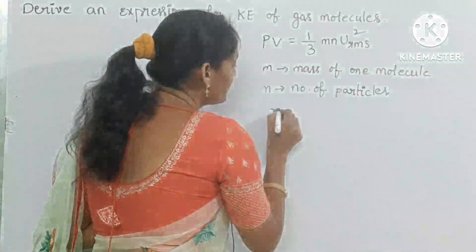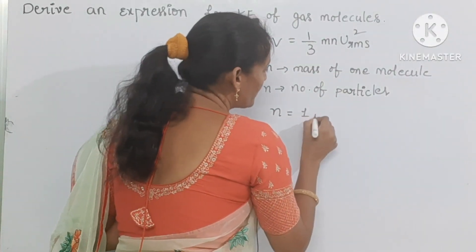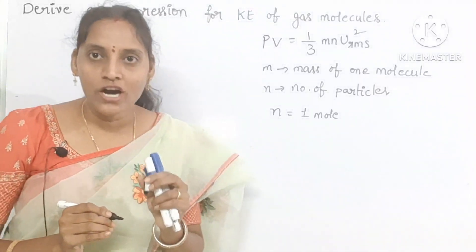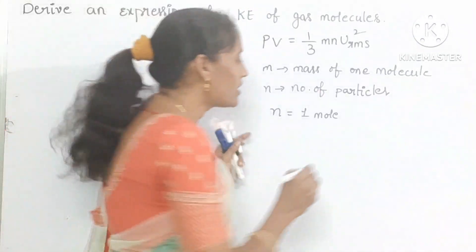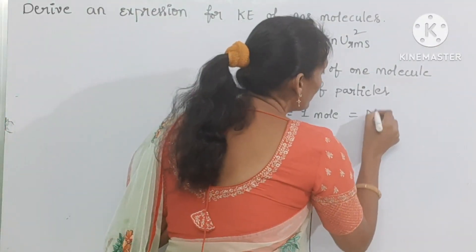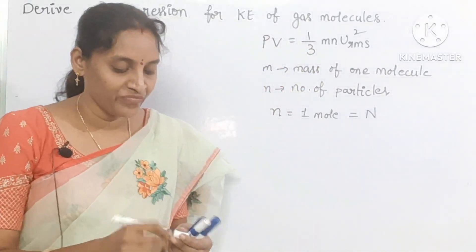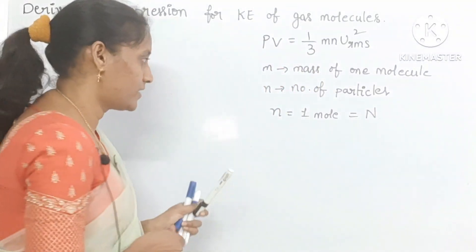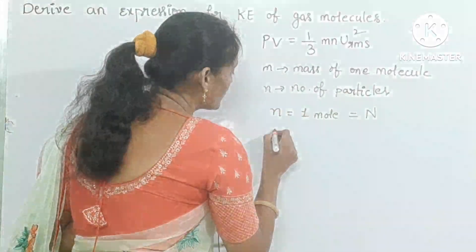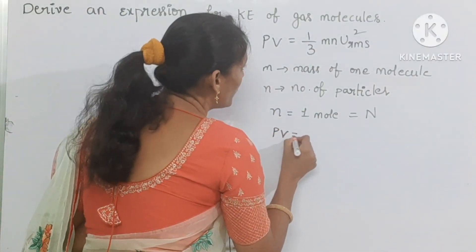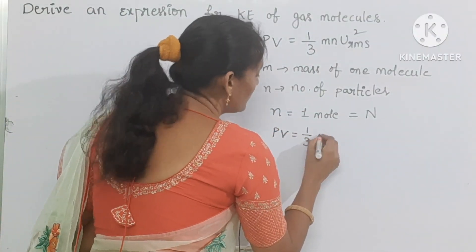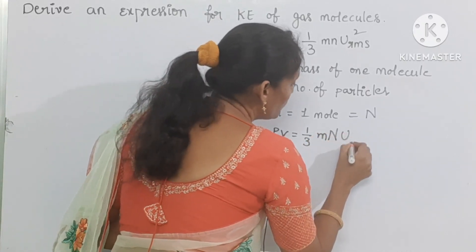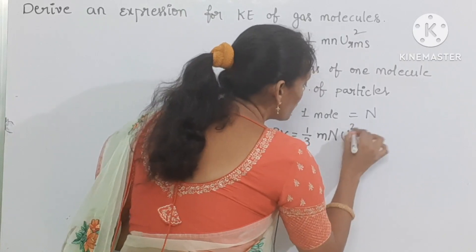If N equal to 1 mole, the number of particles should be Avogadro's number. So you can write small n equal to capital N. So you can substitute this: PV equal to 1 by 3 small m, capital N, U_rms squared.